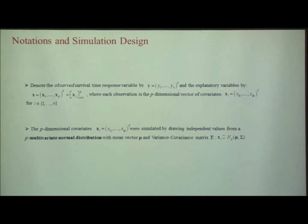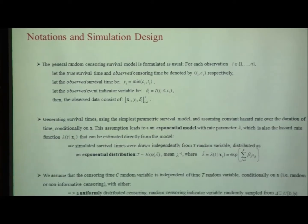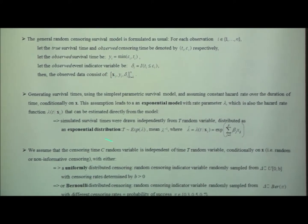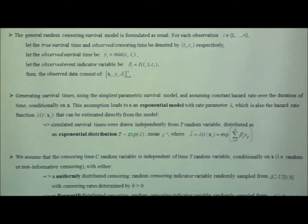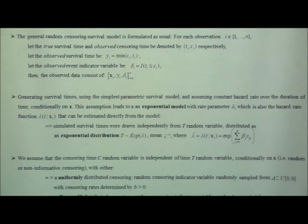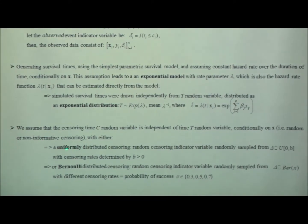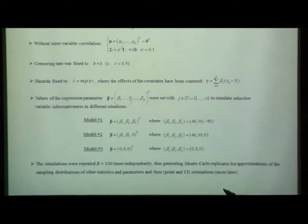The simulation design uses the usual notation: I simulate data as a p-variate multivariate normal distribution and use the general censoring framework for survival. I use an exponential model for the survival time, where the rate parameter lambda can be estimated directly from the treatment effect in the simulation. For censoring, I use a uniform distribution from zero to some parameter B, and also a Bernoulli random variable with some probability of success. So far in this talk I've been discussing low-dimensional problems with P equal to three. I tested three different models depending on how the variables enter: model 1 where all three variables enter with some coefficients, model 2 where only two out of three enter, and model 3 which is pure noise.